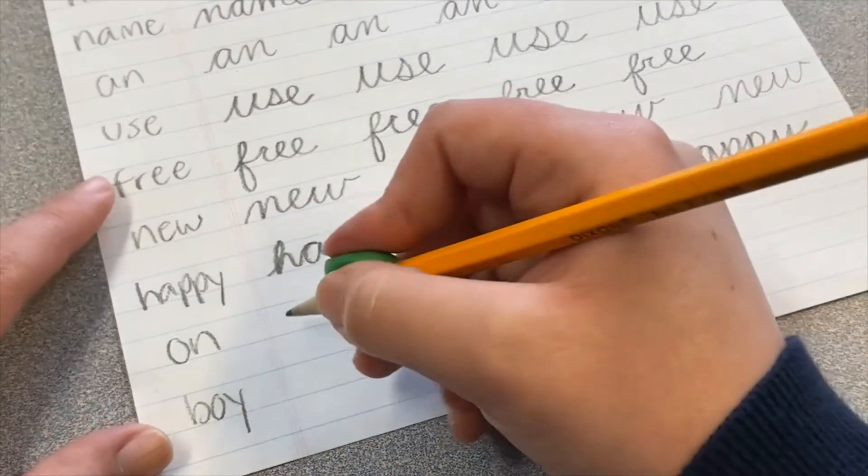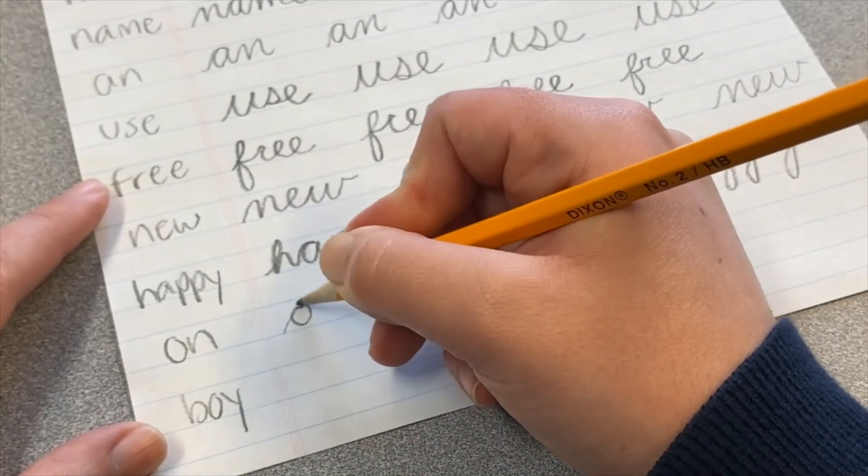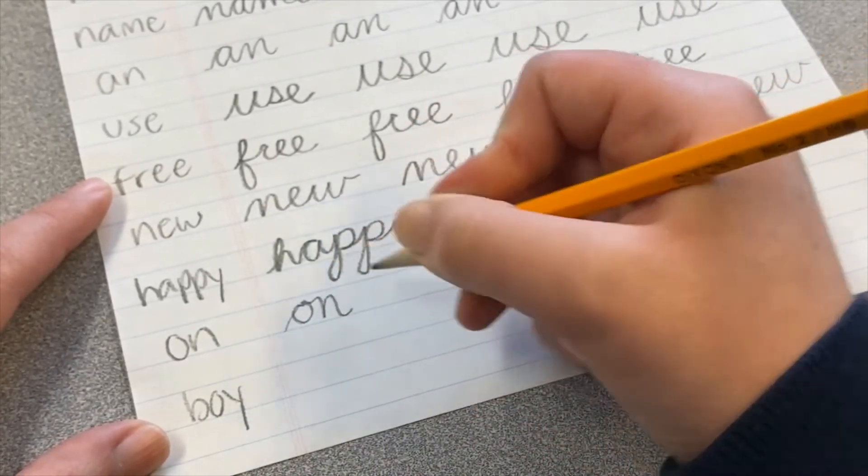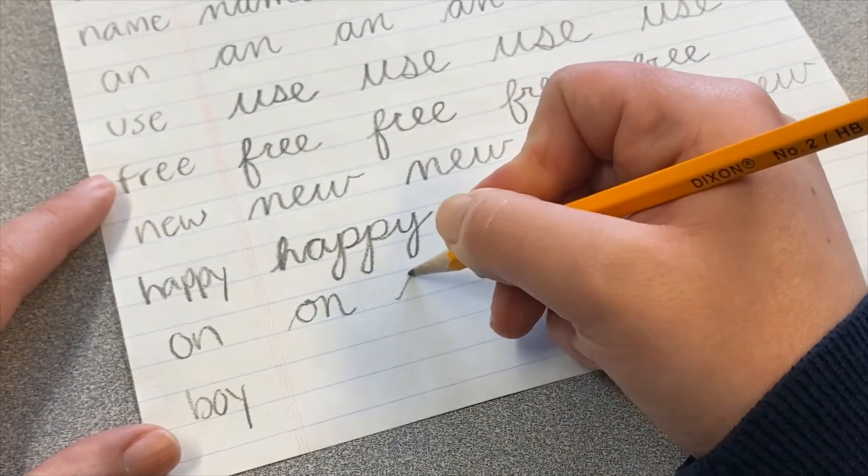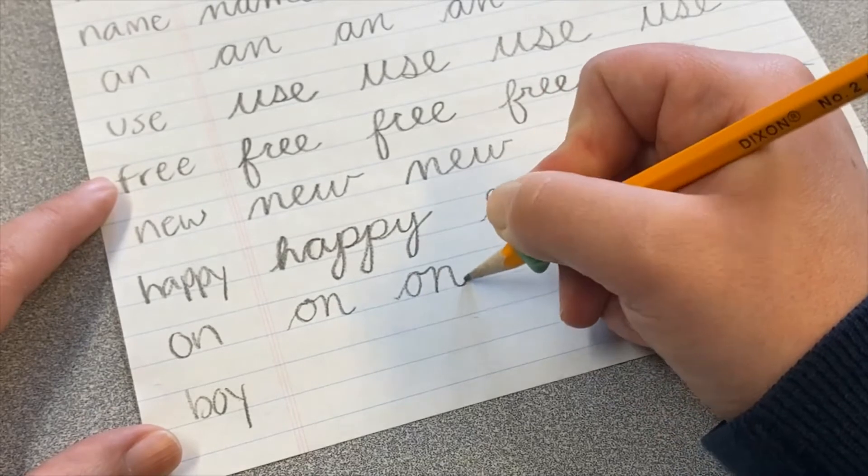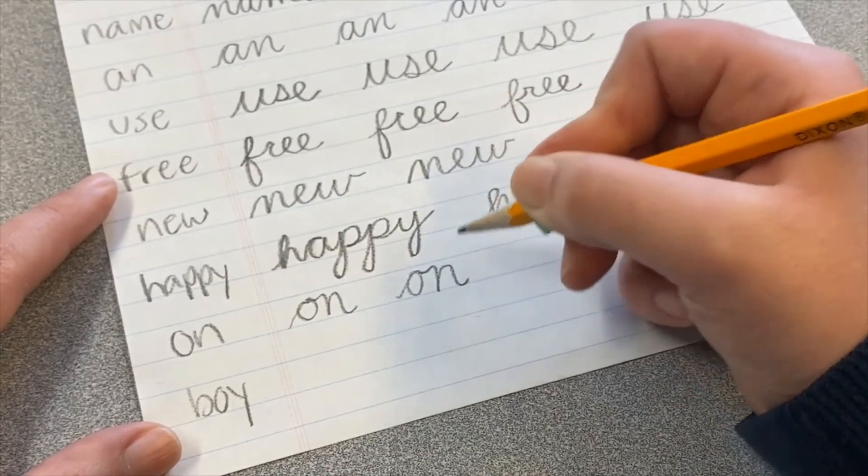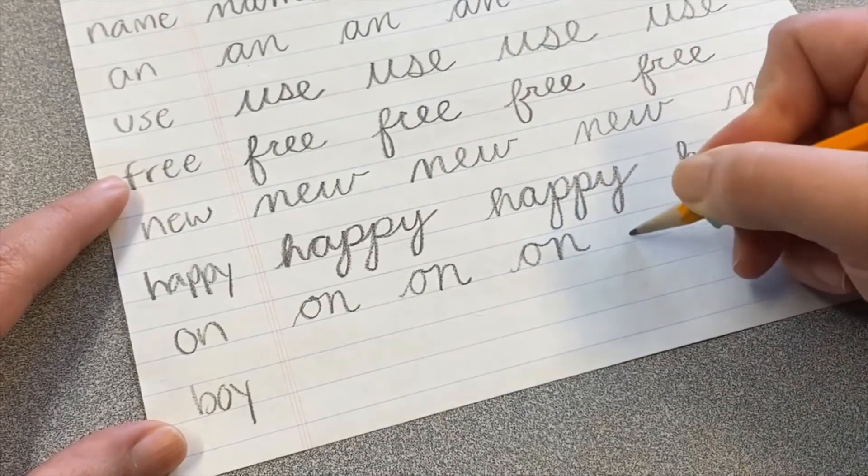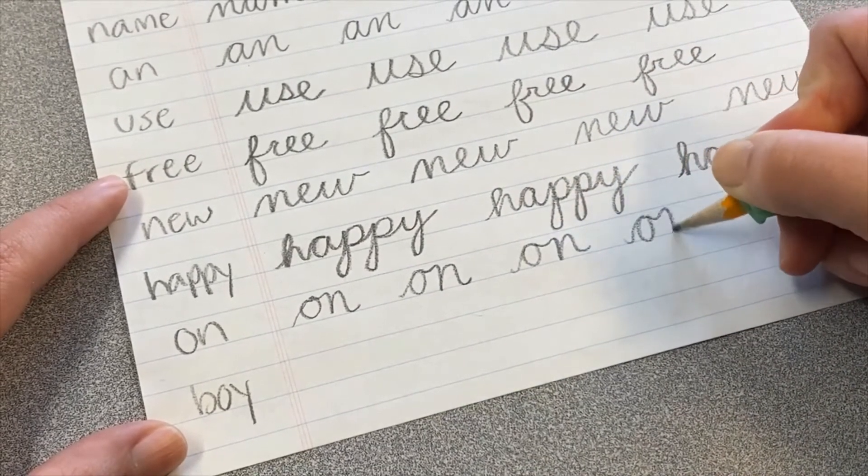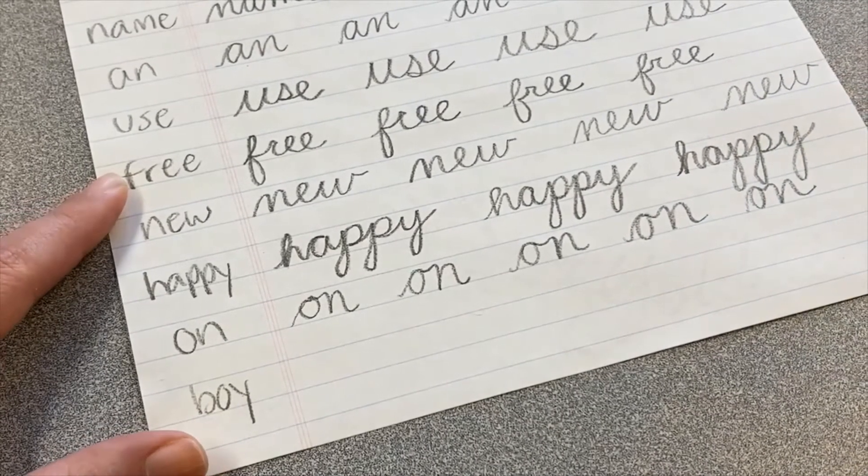Next word is the word on. So we have the O and the N. O, N. Remember, the O comes out the top, so then you can really easily go right into the N.